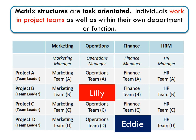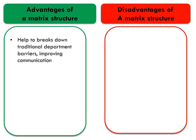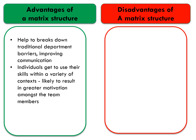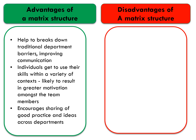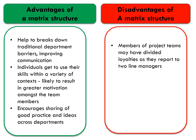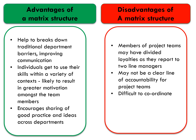Similarly, Eddie works in the finance department doing finance jobs under the finance manager, but is also part of project D — a cross-department team with a leader, involving people from marketing, operations, finance, and human resources. It's important that different departments talk to each other and work together on particular projects, which is why we call this a matrix structure. Advantages: it helps break down traditional department barriers improving communication, individuals use skills in a variety of contexts offering more motivation, and it encourages sharing of good practice across departments. Disadvantages: members may have divided loyalties reporting to two line managers, there may be no clear line of accountability, it's difficult to coordinate, and people working on the project may neglect their departmental responsibilities.